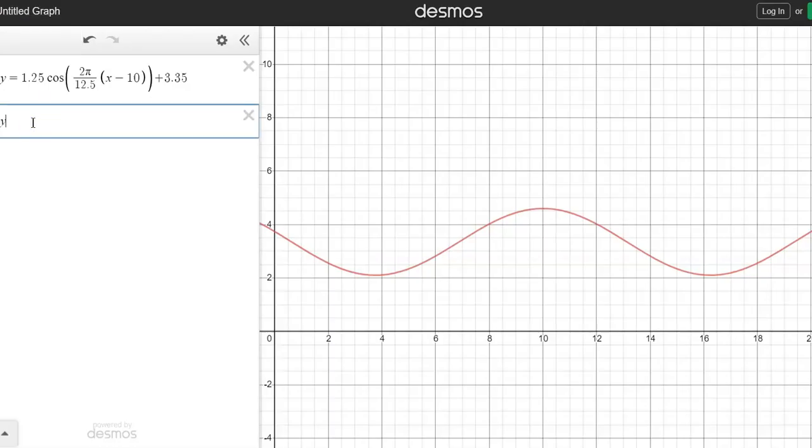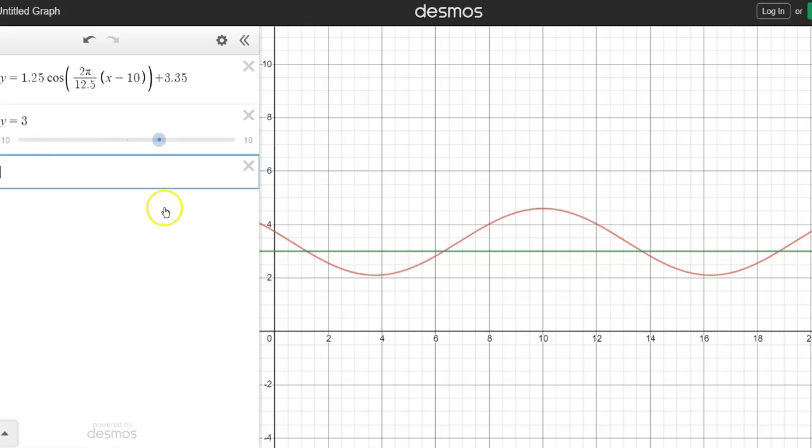We can use Desmos to help us here. If we type in y equals three, we've got a line there that gives us the three meter line, and we can work out when that crosses the cos curve that we've got here. So it's at 13.69 and 6.31 and 1.19. We can use those pieces to say when it's above three meters.